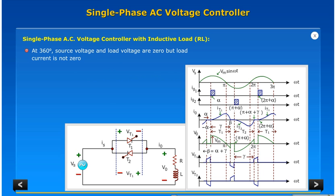At 360 degrees source voltage and load voltage are zero but load current is not zero. At 180 degrees plus alpha plus gamma, current becomes zero and T2 is turned off because it is already reversed biased.